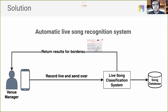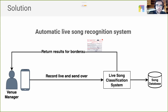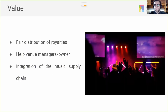A solution to this problem would be to automatically record, recognize, and send live performances by audio, so that venue owners could complete the border row more easily. The value of this would be to enable a fair distribution of royalties, encourage venue managers and owners to fill in the border row correctly, and create a smooth communication flow between venue owners, record labels, and artists.